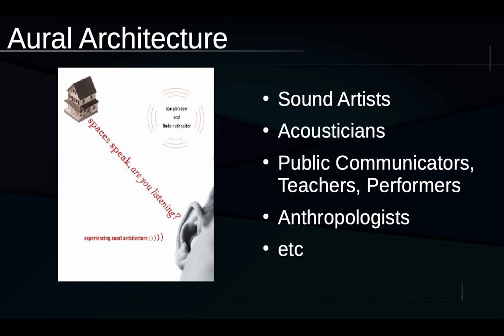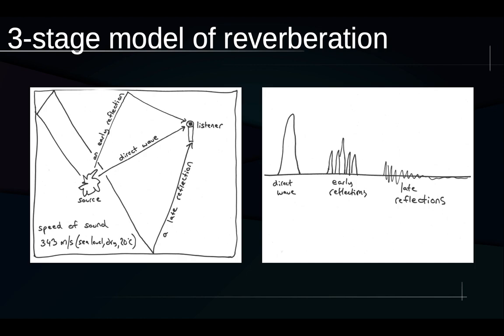So I want to turn back now to reverberation, to the specific set of things that happen when we make a sound in a space where there are surfaces around that can reflect and absorb that acoustic energy. There are lots of ways we could think about this, but for the purposes of this course, I'm going to take a kind of three-stage model of reverberation. These two diagrams show the three-stage model in two different ways.